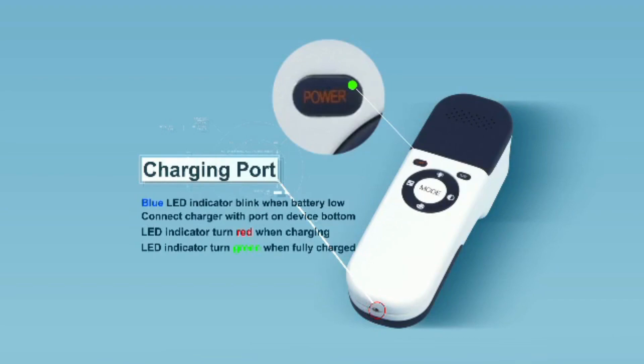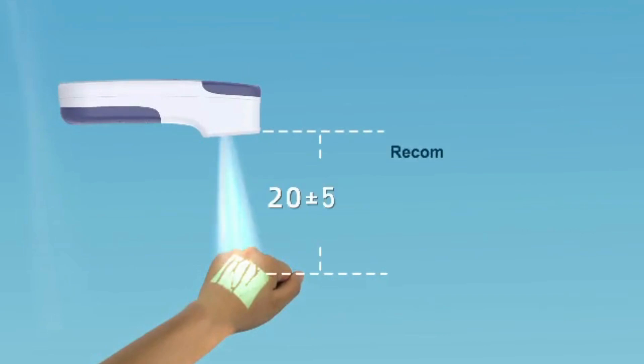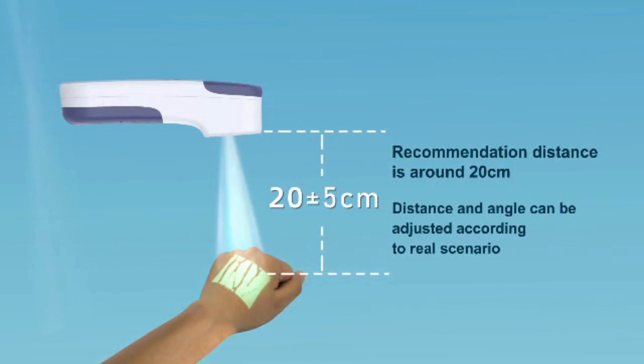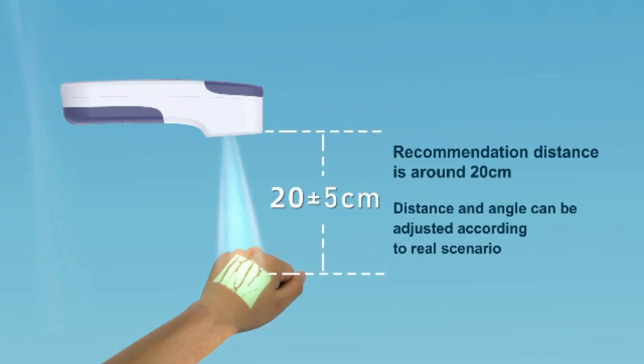To get a good vein image of the patient, keep the distance between VeinFinder and skin at around 20cm. This distance can be adjusted appropriately according to real scenario to ensure the projected image is clear.